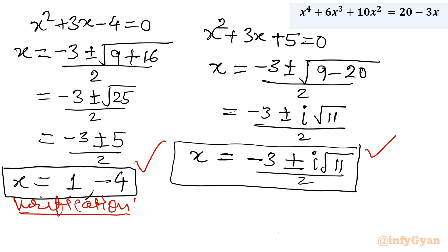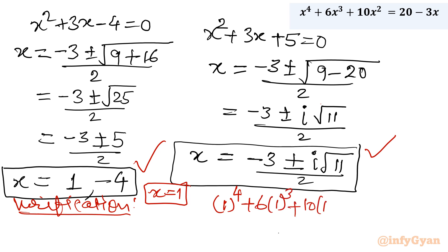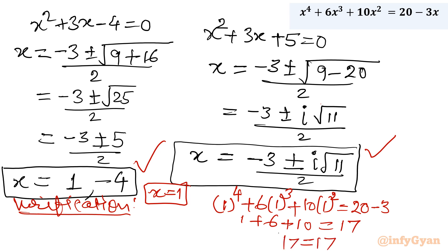Let me write: for x = 1, we have 1⁴ + 6·1³ + 10·1² = 1 + 6 + 10 = 17. The right-hand side is 20 − 3·1 = 17. So 17 = 17 — this value is verified.